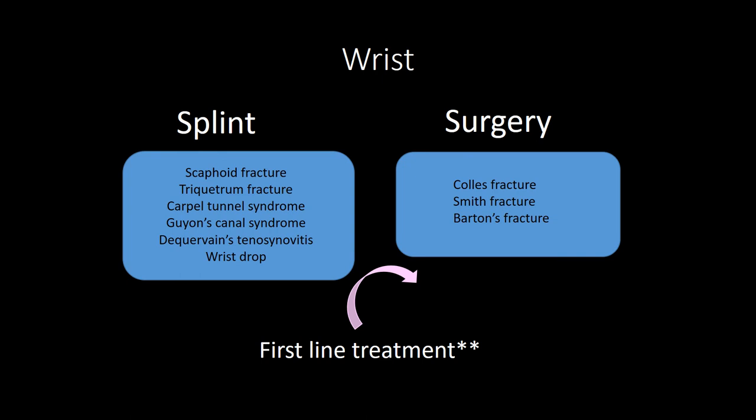Carpal tunnel syndrome is entrapment of the median nerve. Risk factors include pregnancy, diabetes, hypothyroidism, and rheumatoid arthritis. Phalen's sign is hyperflexion of both wrists reproducing paresthesias in the median nerve distribution. Tinel's sign — remember the mnemonic, both start with T — is tapping the volar wrist to reproduce paresthesias in the median nerve distribution. Treatment is splinting, steroid injections, and surgery if those fail.